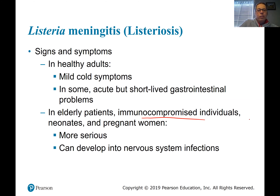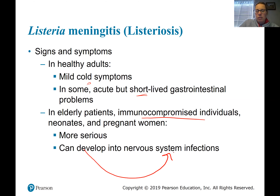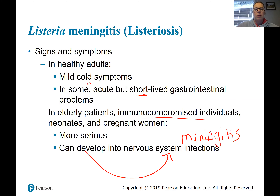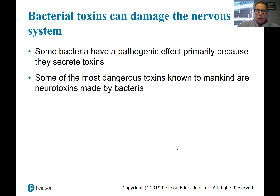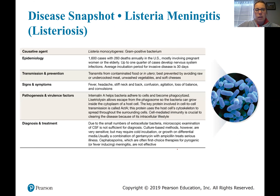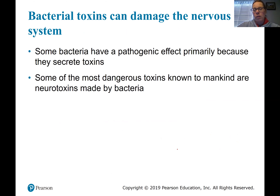In healthy people there may be some cold-like symptoms — not a big deal, maybe a little vomiting or diarrhea. But it can be more severe and develop into nervous system infections like meningitis. Listeriosis would start with ingesting contaminated food, progress through digestive issues, and develop into meningitis. One notable characteristic of Listeria is that the bacteria produce actin filaments as tails and can actually burrow through and burst from cell to cell, invading as they go.